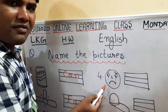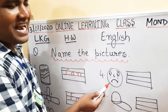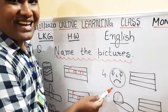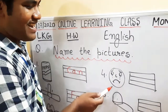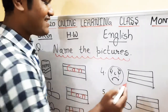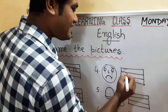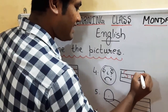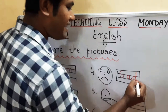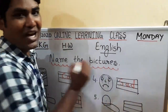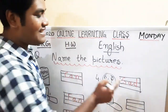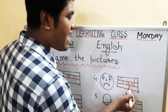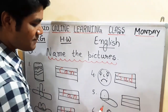Is it a happy face or a sad face? Tell me. It is a sad face, na? Yes. So write down S-A-D, sad. A-D, add sound word. Sad is an example of add sound words.